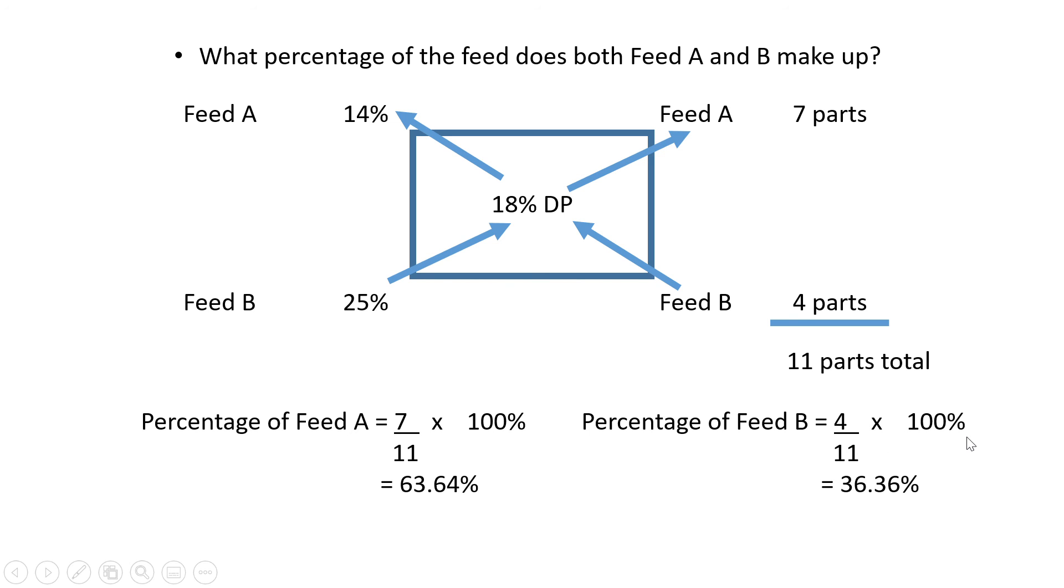Basically in this ration, the majority of the feed is Feed A—could be roughage, could be concentrate—and the minority is Feed B. This tells you in this mixture what is given the most and what is given the least. We're figuring out the parts of this entire mixture. That's the point of this, and that's the end of this lesson.